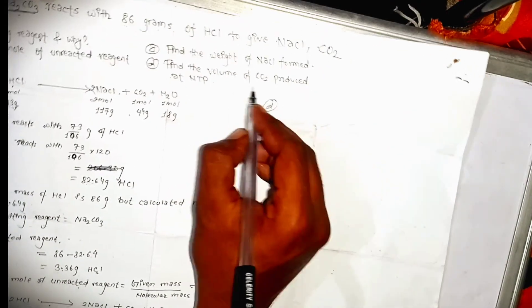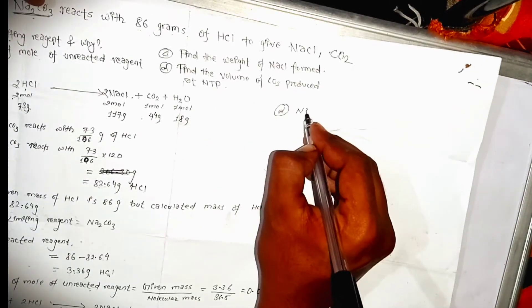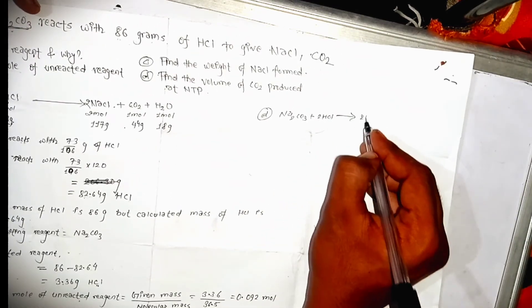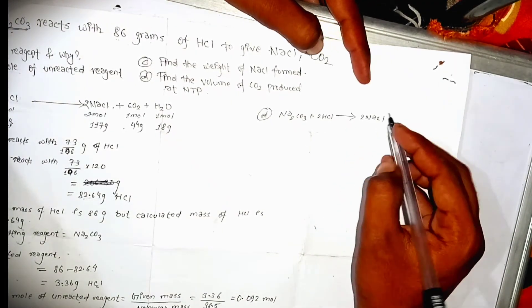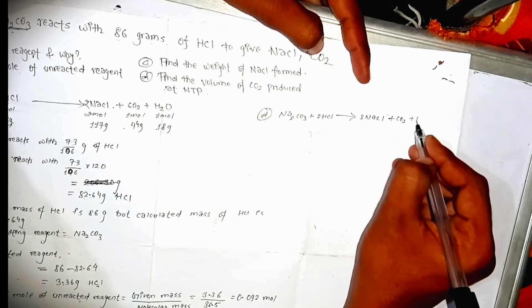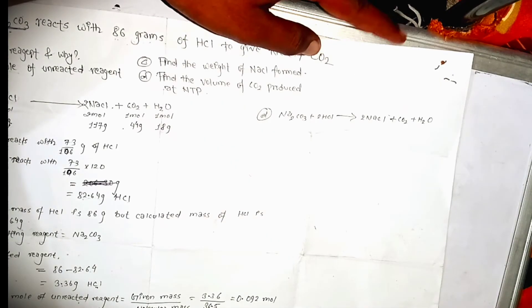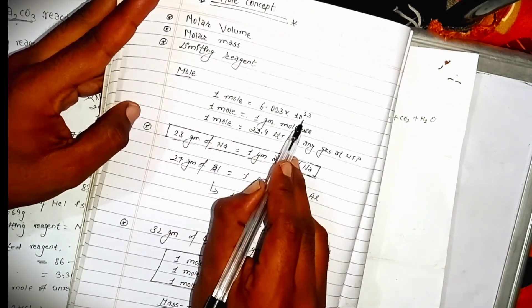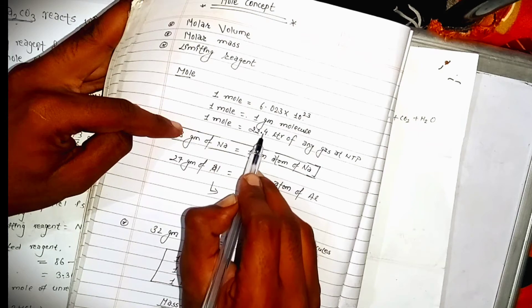The next part: find the volume of CO₂ formed at NTP. The reaction is Na₂CO₃ + 2HCl → 2NaCl + CO₂ + H₂O. One mole of Na₂CO₃ gives one mole of CO₂. One mole of any gas at NTP occupies 22.4 liters. So we focus on CO₂: one mole is 106 grams of Na₂CO₃, and one mole of CO₂ is 22.4 liters.